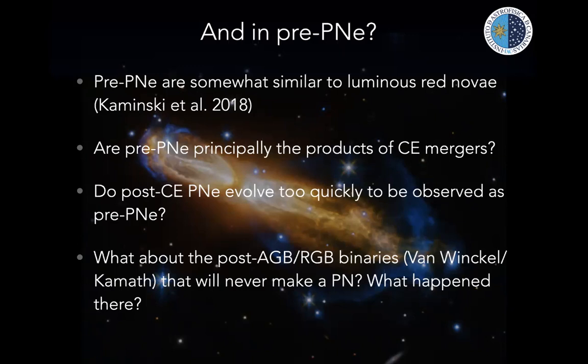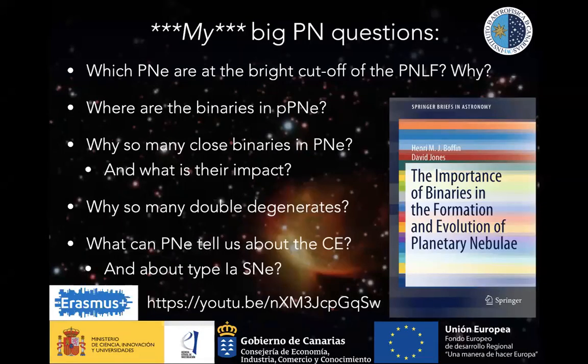If so, perhaps post-common envelope binaries that we see in planetary nebulae pass through the pre-planetary phase too quickly, or don't experience one at all. Similarly, what about the disky post-AGB and post-RGB binaries that Hans van Winckel and Debbie Kakamath have been finding? These seem able to bypass the planetary nebula phase entirely — they should have been planetary nebula progenitors, but they don't form planetary nebulae.